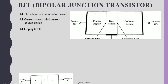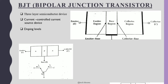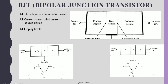There are two types of BJTs: NPN and PNP. In NPN, a P-type material is sandwiched between two N-type materials. In PNP, an N-type material is sandwiched between two P-type materials. The arrowhead on the emitter terminal in the transistor symbol indicates the direction of current flow. In NPN, conduction takes place due to electrons as majority carriers, while in PNP, conduction takes place due to holes as majority carriers.